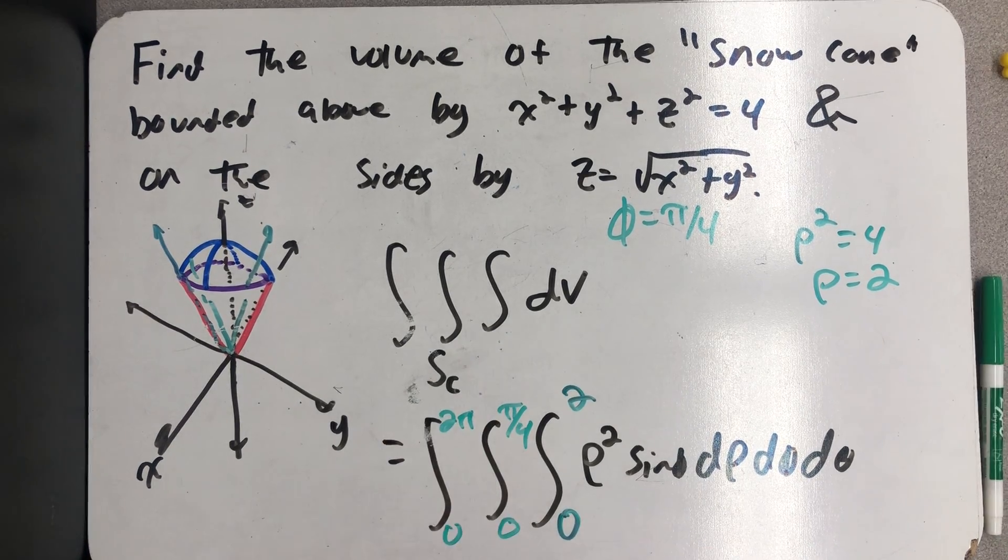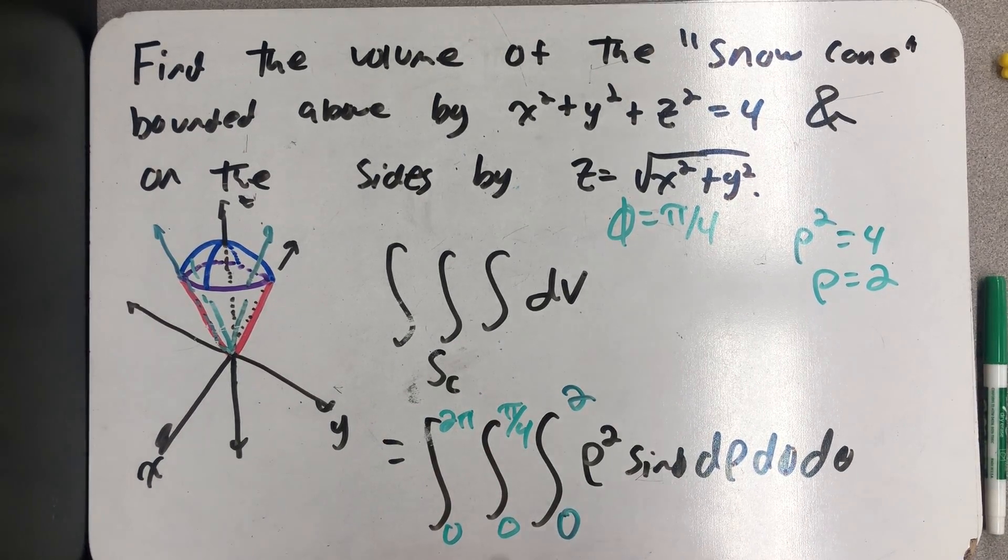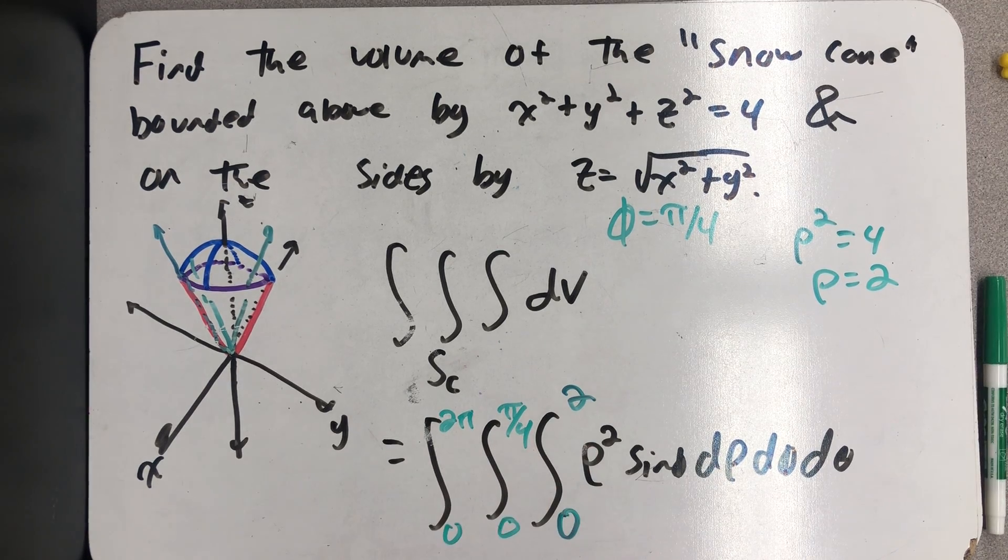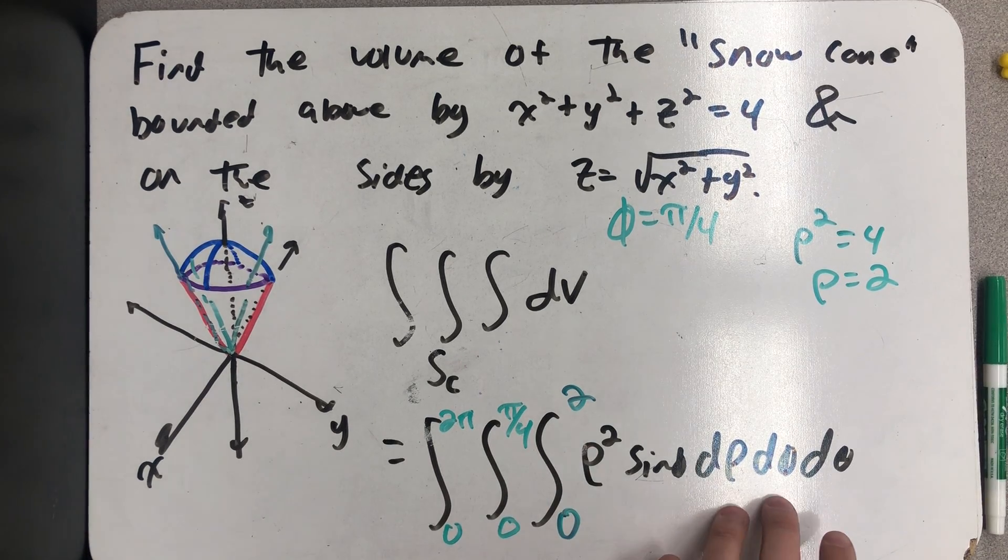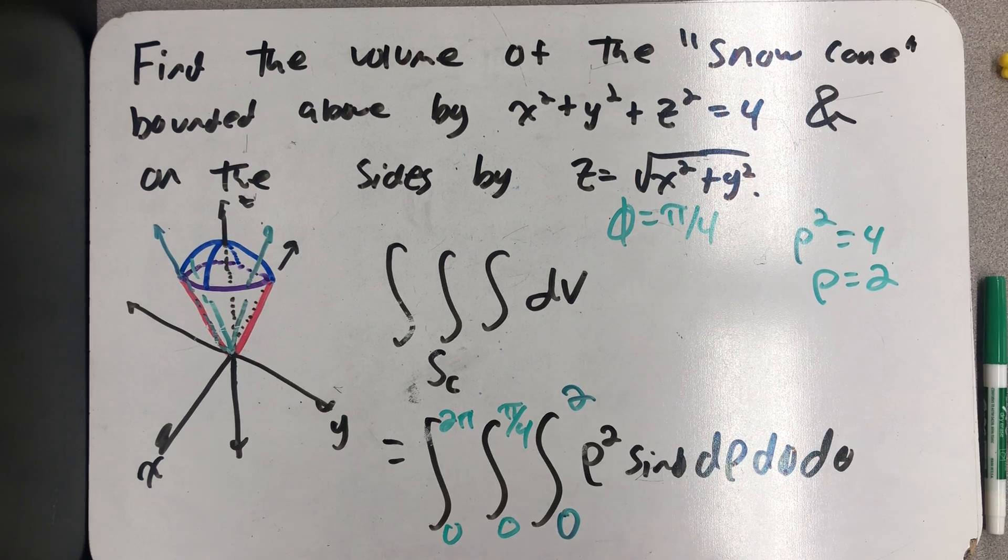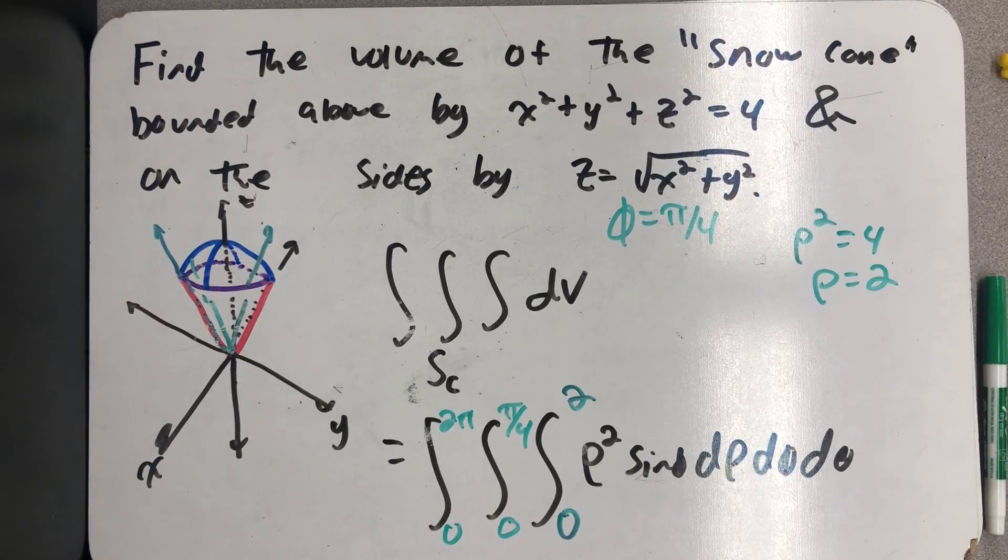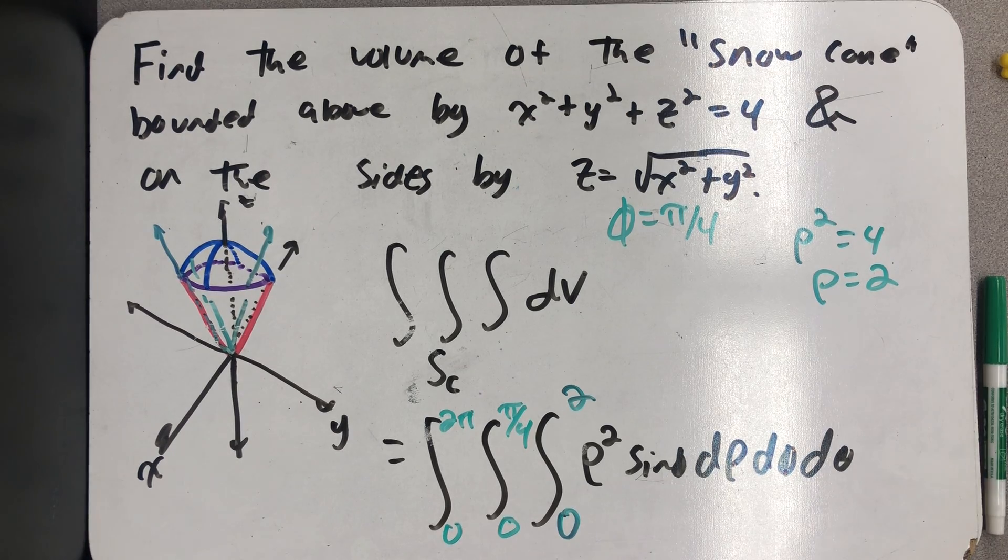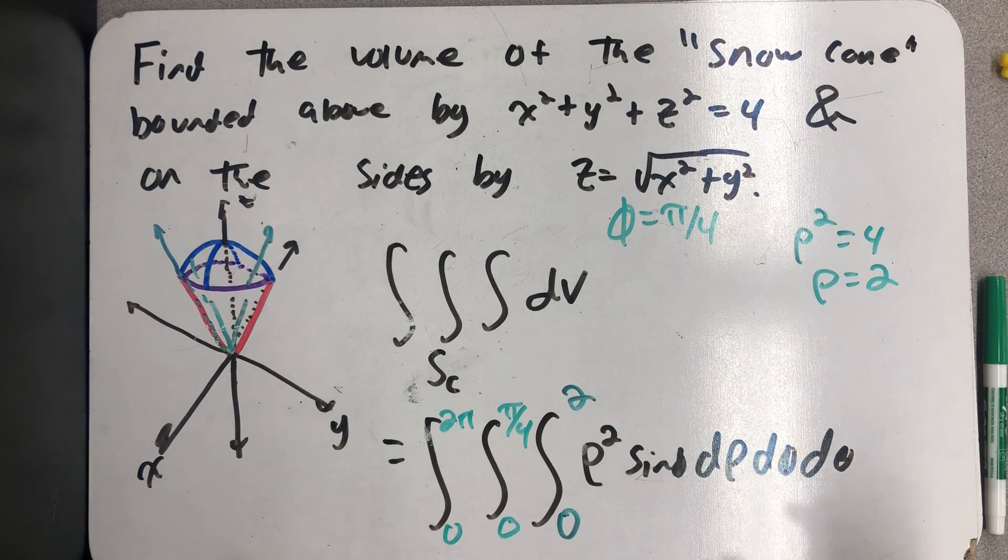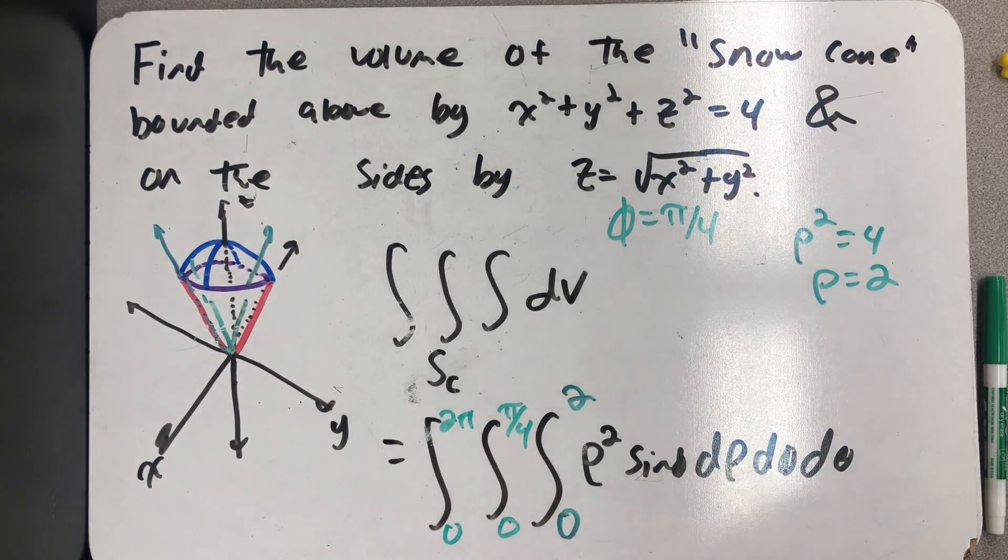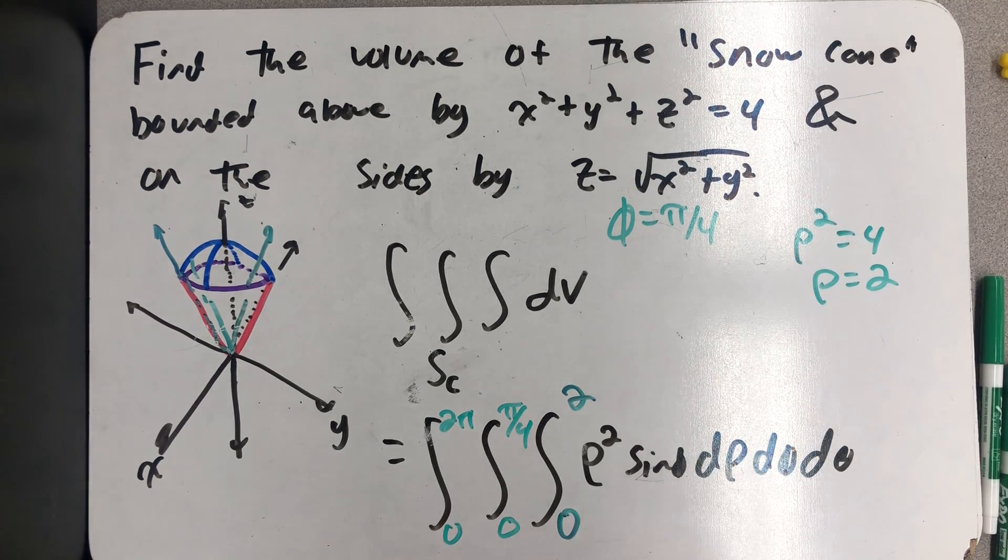Well, this is a really nice integral to evaluate because all of my bounds are constants. If this was an x, y, and a z, this would be a triple integral over a rectangular prism. And so I can actually integrate in any order I want just by swapping bounds around. But I will proceed with what we have written here. I need a little more space, so I'm going to move to the next board.